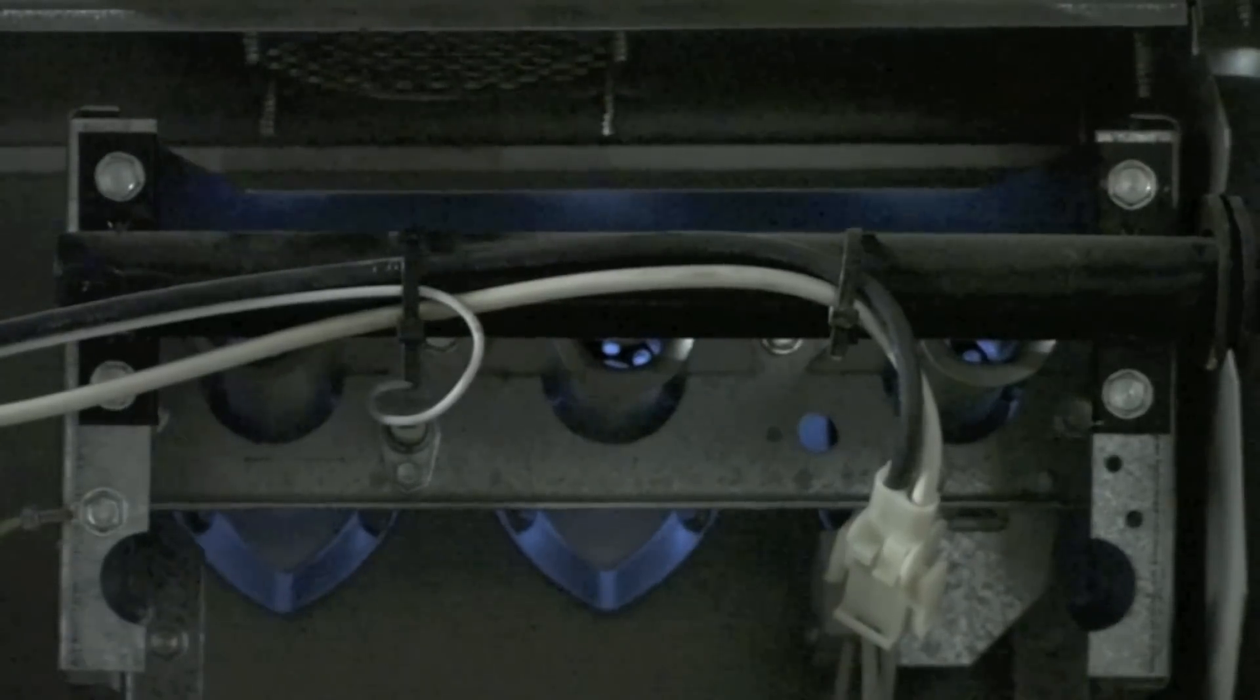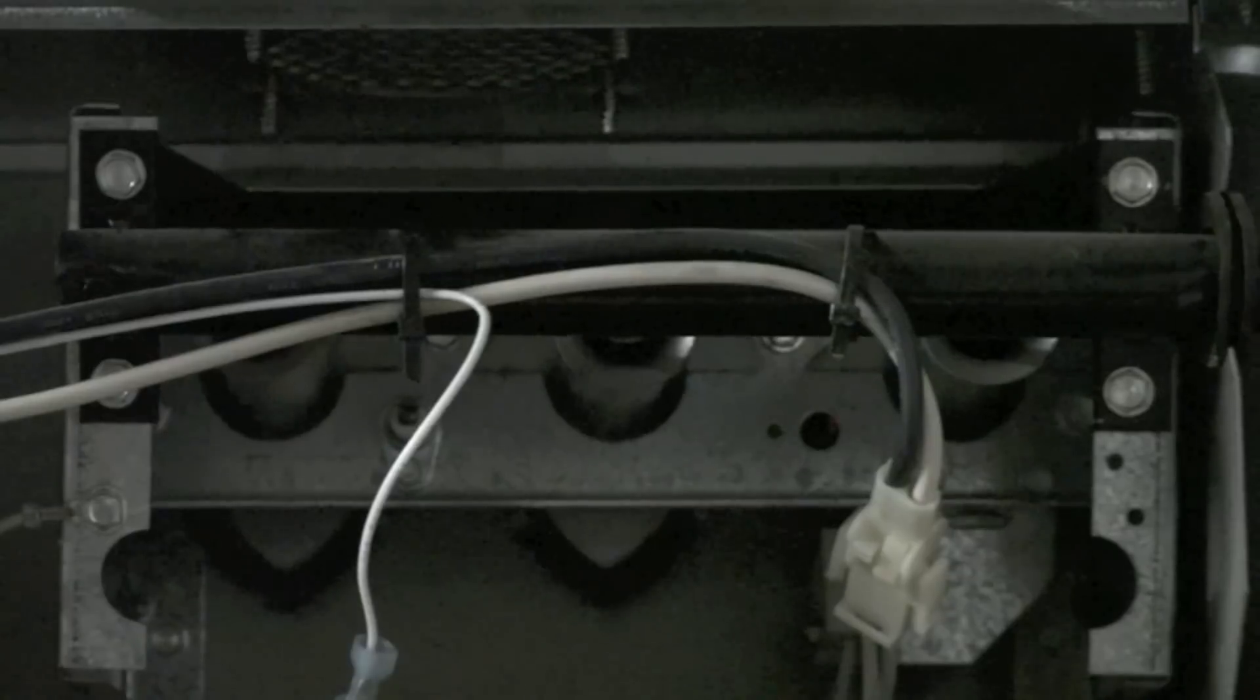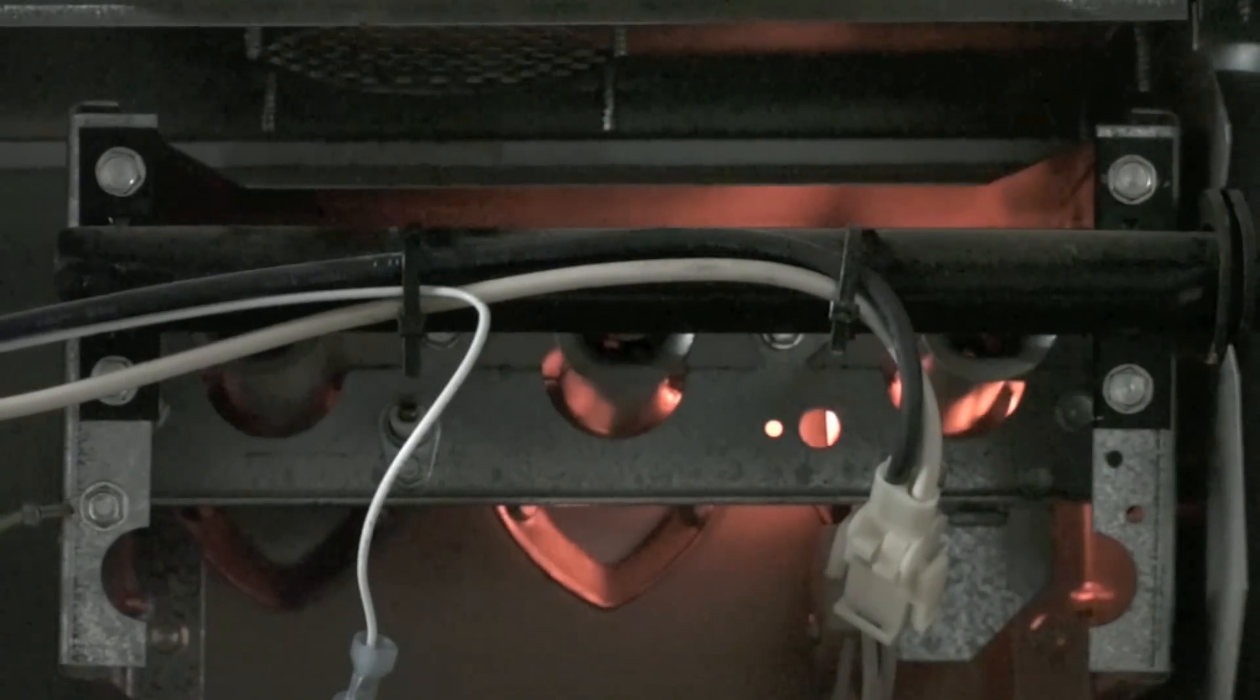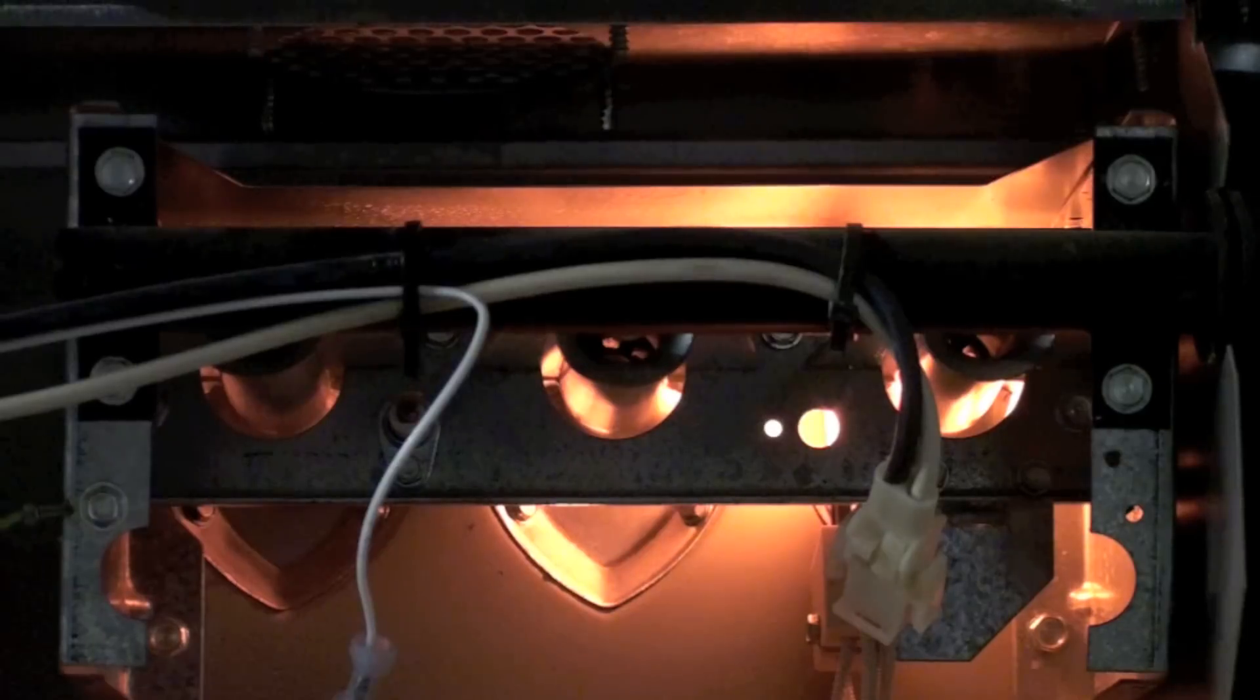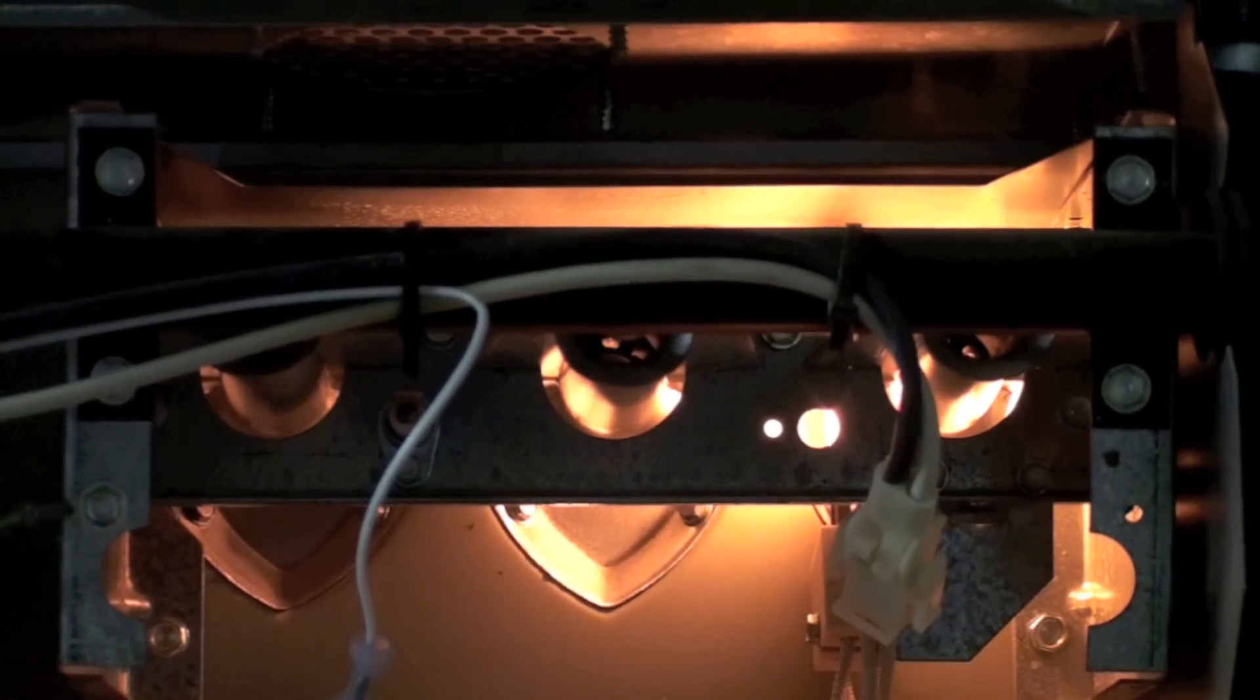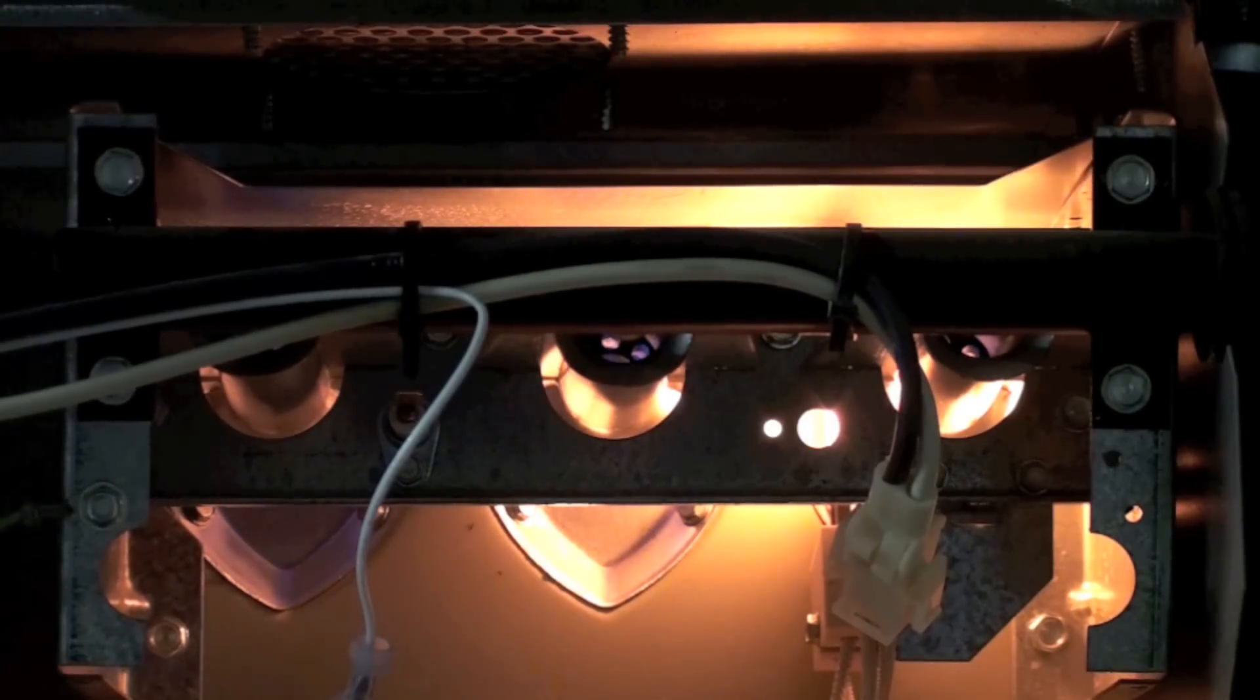You can see that blue flame in there. Where we get abnormal is if for some reason we lose that flame signal, it's going to shut off and it's going to try again. You can see that hot surface igniter come on. Okay, there's your flame.